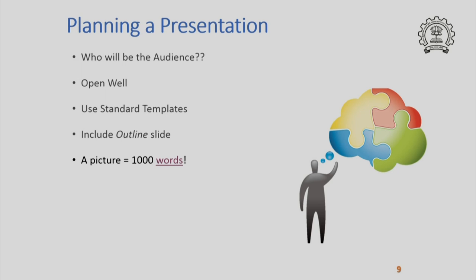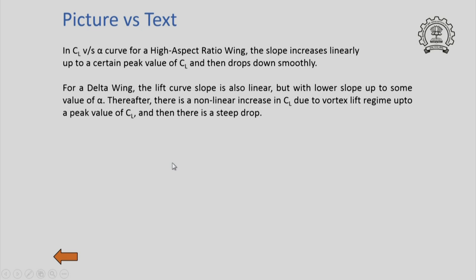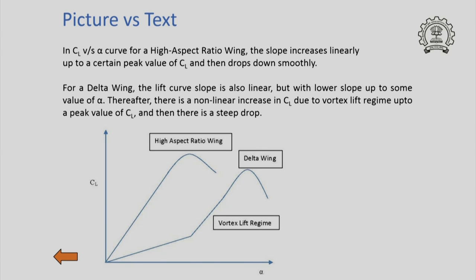Remember, a picture is always more important than words — it is said that a picture is worth a thousand words. For example, this is a text which describes a curve in aerospace engineering called the CL alpha curve, and you can see the text goes on quite laboriously describing this curve for two types of aircraft. Instead, just one simple picture with two lines clearly indicates what the trends are and communicates the same information in a much better fashion. So would you rather see the picture or would you prefer someone to show you the text? The answer is quite clear.